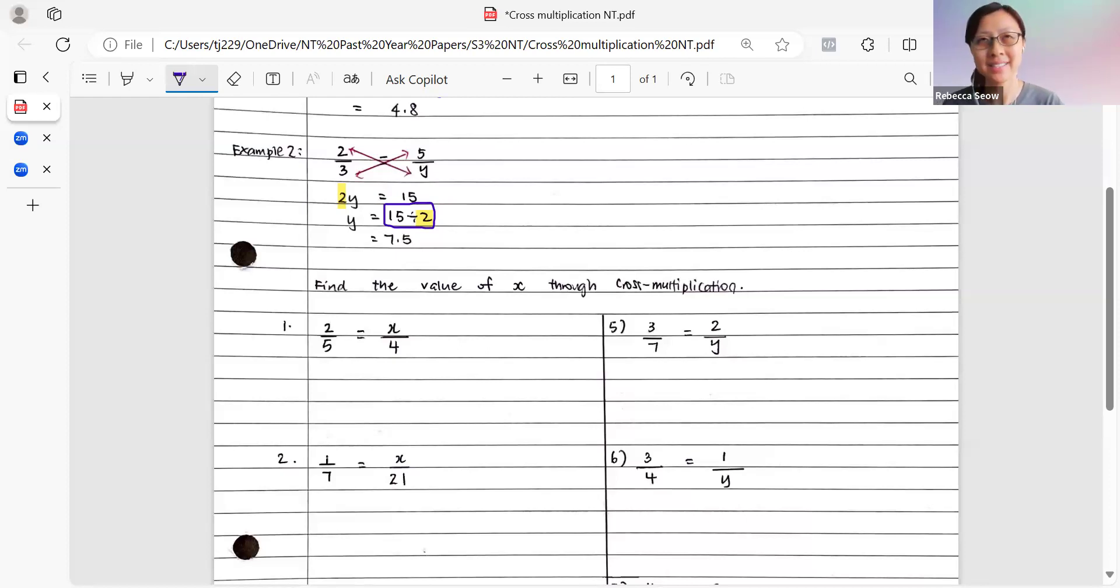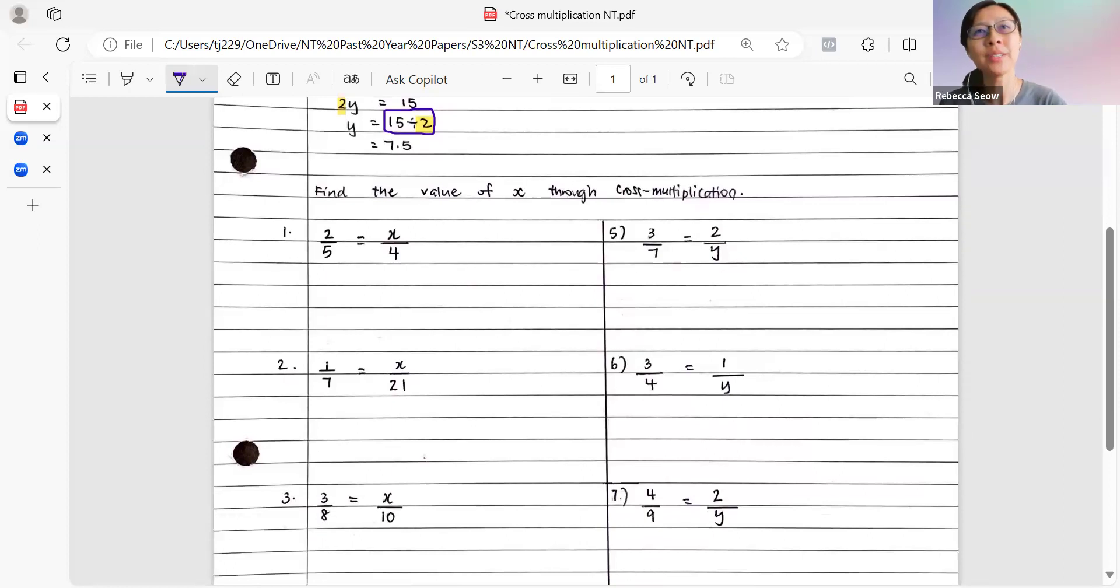Now let's take a look at the answers for these questions. So for question 1, we have 2 fifths equals to x out of 4. Let's draw the arrows across both diagonals. We will look at this diagonal first, since this diagonal contains the variable. So 5 times x gives us 5x equals to 2 times 4, which gives us 8. So x is equals to 8 divided by the coefficient of x, which is 5. Put this in the calculator, we will get 1.6.